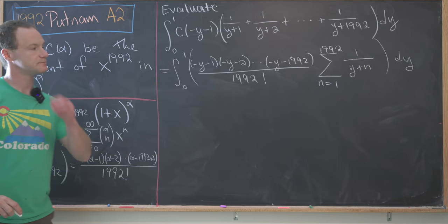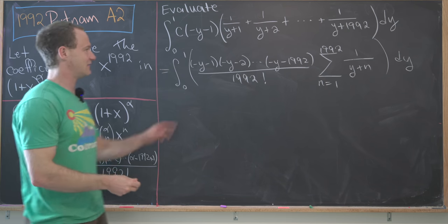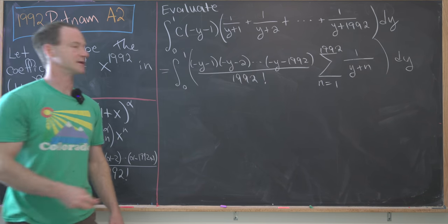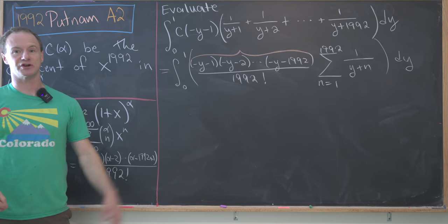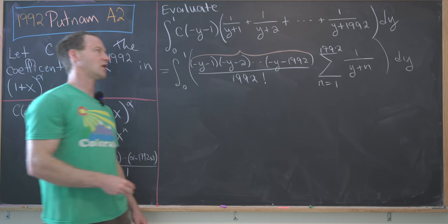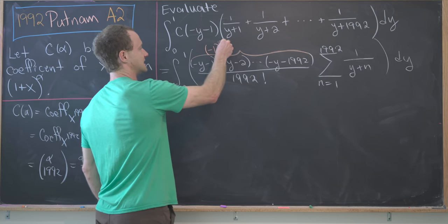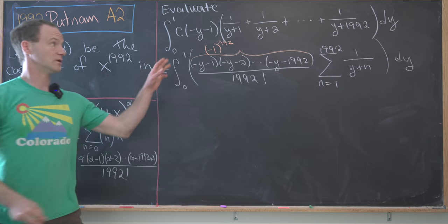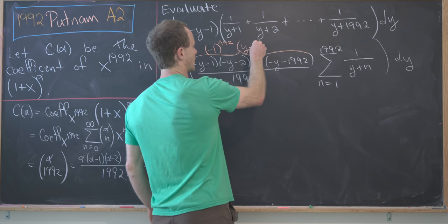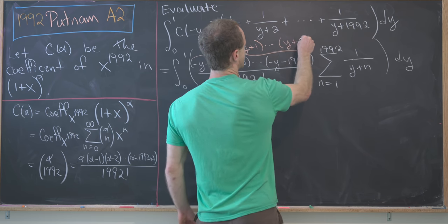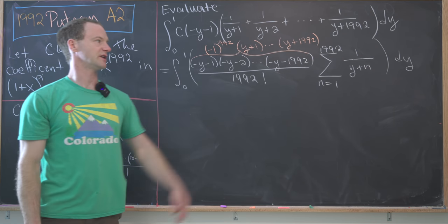So this is our new integral. I first want to notice that I have an even number of terms here. Since I have an even number of terms—in fact there are 1992 terms—I can factor a minus 1 out of all of them, and that does not change the sign. So I'll write this as (-1)^1992. We'll disregard the sign from here on because that's an even number. Then what's left is the product (y+1) all the way up to (y+1992). Now we can take that product and distribute it on the sum.